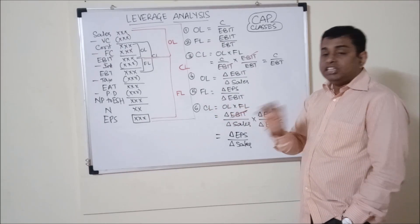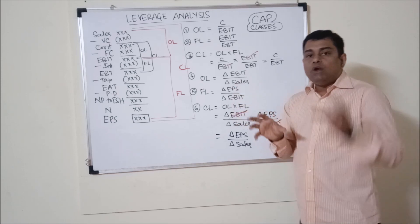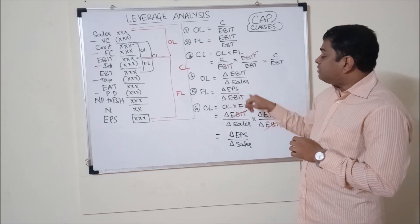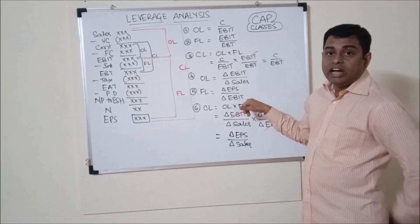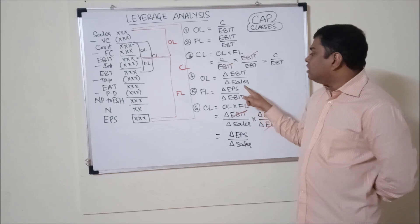Financial leverage similarly is the relationship between EBIT and EBT. If EBIT changes, how EBT is going to change. So percentage changes in EBT divided by percentage changes in EBIT. That means if EBIT changes by 1, with what magnitude EBT can change.